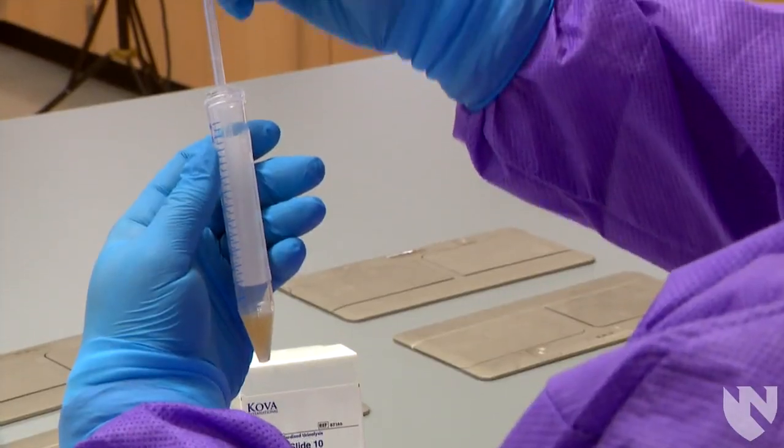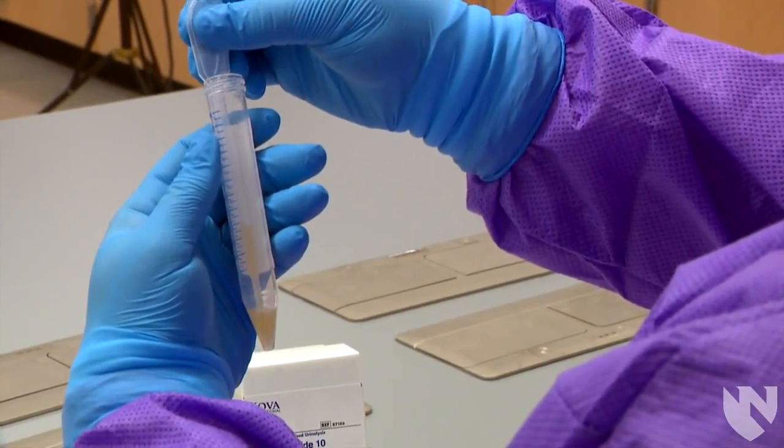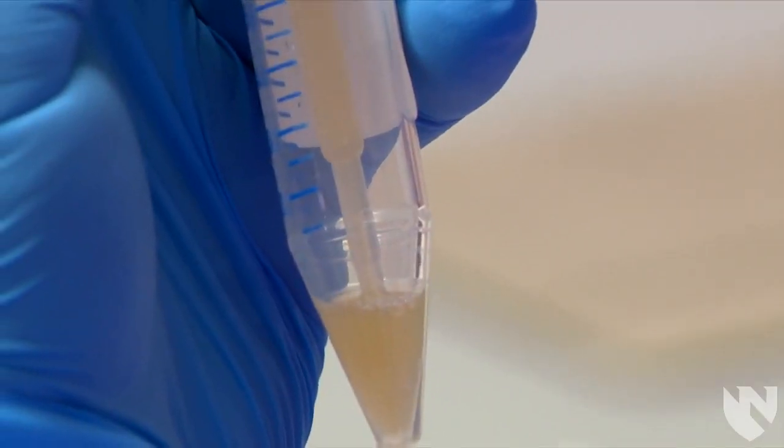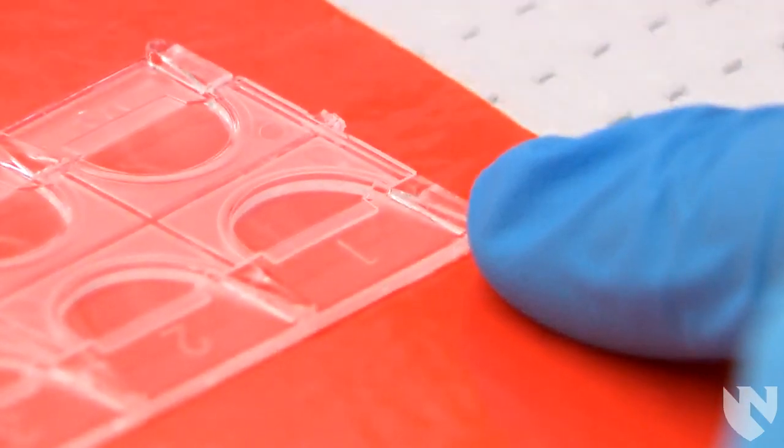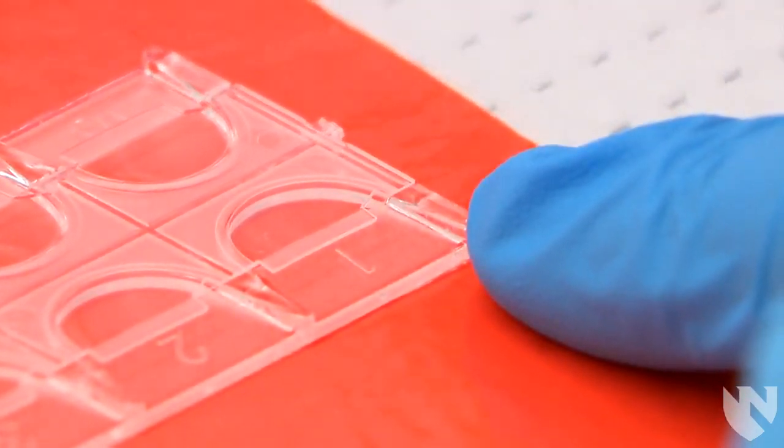Take the disposable pipette and aspirate some of the resuspended urine. Try not to get any bubbles in the pipette. Each well in the Cova slide has a notch. This is where you will place the end of your disposable pipette.